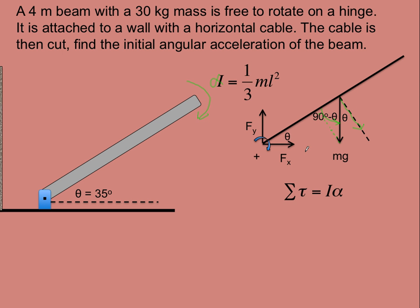Sum of the torques equals I alpha. The torque would be the weight times cosine theta, or again sine 90 minus theta, times the lever arm. Don't forget the lever arm—this is sum of the torques, and so we need the lever arm which would be half the length since the weight is at the center of the beam.